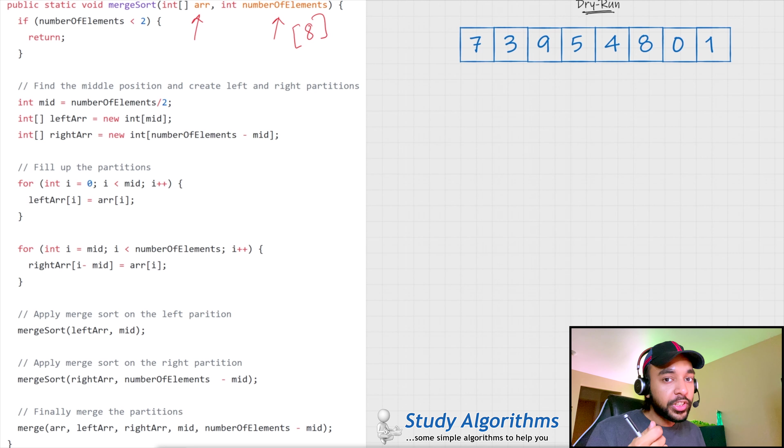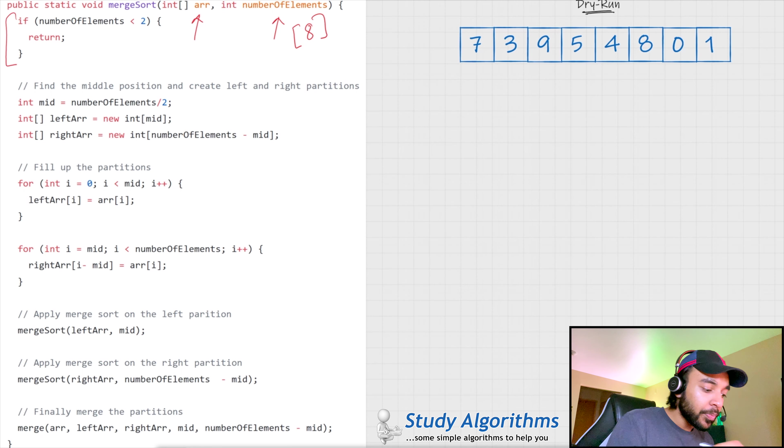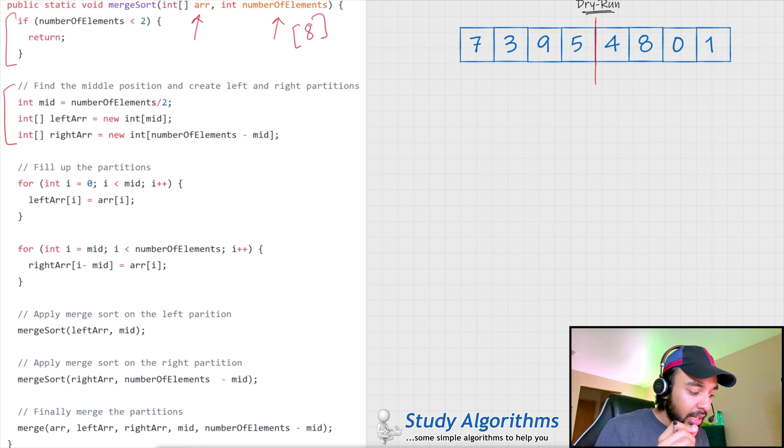Next, do you remember how we stopped when we had just one element remaining? So, this is our next condition over here. So, if the number of elements is less than 2, that means you just have one element remaining. You can't sort one element, right? And, that is why you simply return. Going forward, like we were splitting our array into two halves, right? So, the next piece of code finds the middle element and then it creates two new arrays, the left array and the right array.